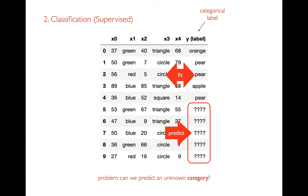The classification problem looks very similar. Again, I might have some mix of quantities or categories as my features. The main difference now is that I have a categorical Y, or label column. Otherwise, I'm still going to be fitting my features to my label, and then trying to do some sort of prediction on it.